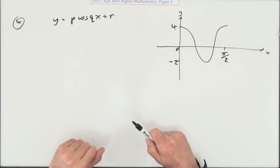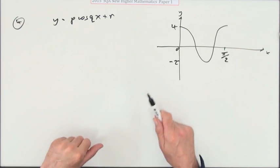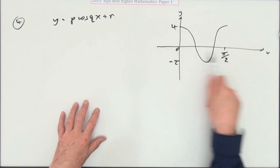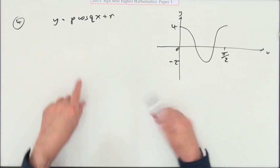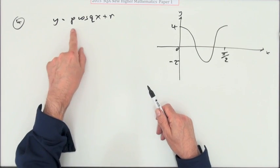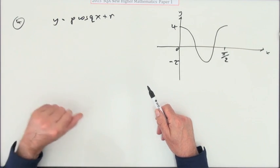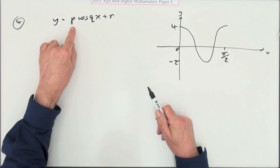Number four from paper one of the 2015 new higher: there's a snapshot of a trig function just showing the part from 0 to pi upon 2. It says it's the graph of this thing: p cos qx plus r, and just says write down the values of p, q, and r. So that'll be a mark each.